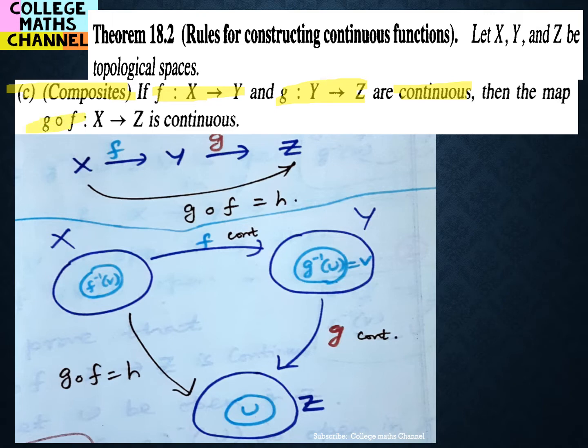We can prove that. Now, X, Y, Z are three topological spaces — topology exists, so we have open sets. The open set concept is the main idea in topology, and we can use it to prove this.